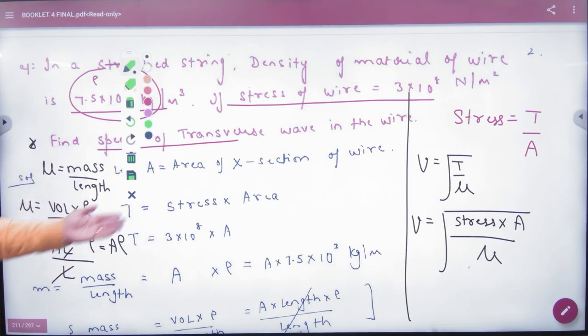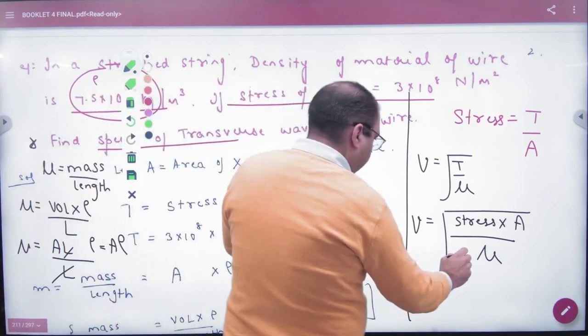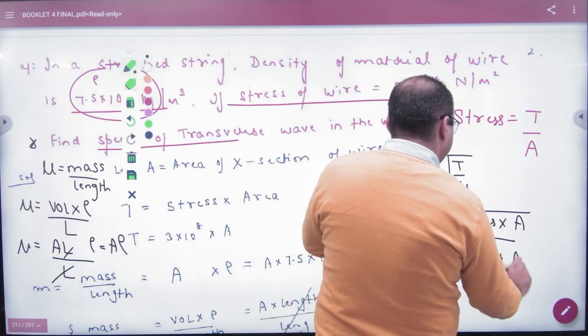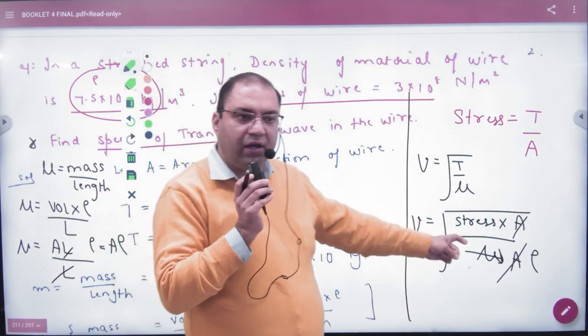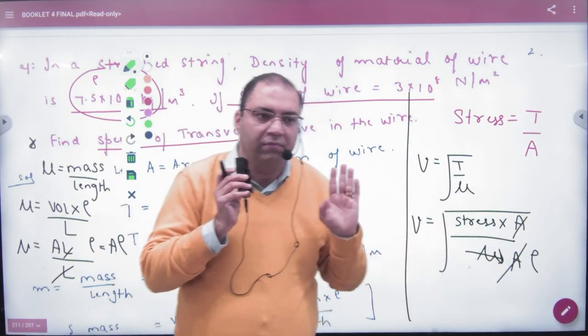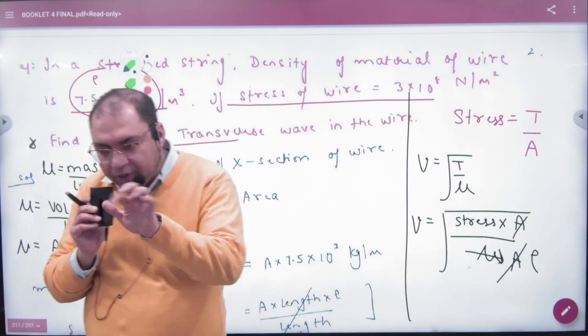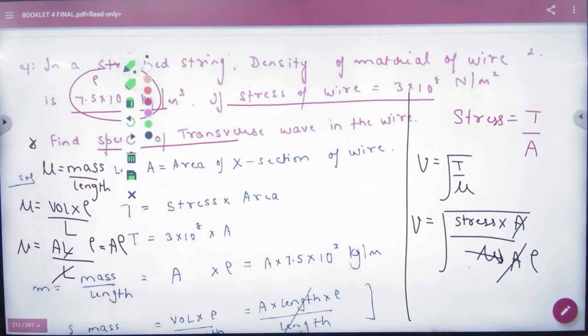Yeh likh lehen, agle saal tak bhul jayenge. Mu ka matlab, agar mein JEE Mains mein bharai pad gaye hain questions iske upar, is formula ke upar. Wahi mu mein khelta hai, hamesha mu ko hi change karta rehta hai: area into density. Mu hai to put kar deh. Yaha par kya put karne wala hun: area into, cut gaya. Aapko question mein stress pata hai, aapko density pata hai, answer.